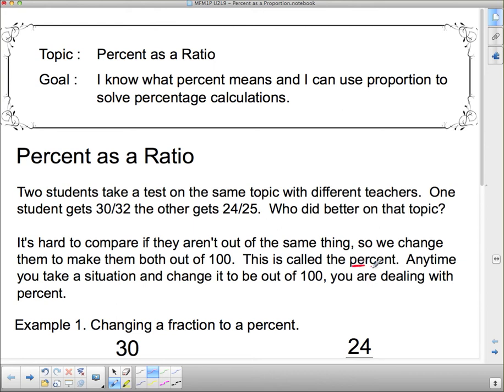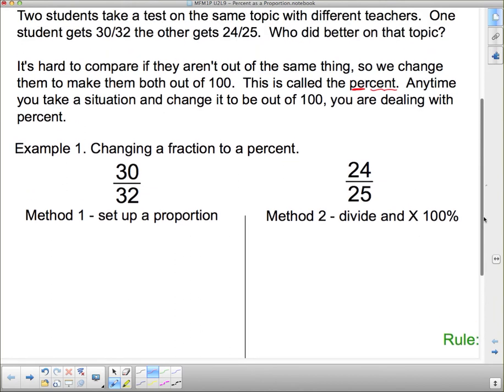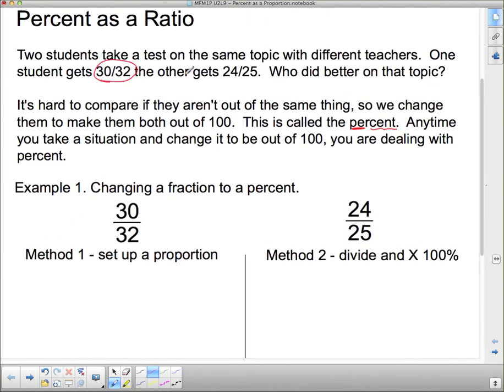Per means out of and cent means 100. There are 100 cents in a dollar. So percent means out of 100. Anytime you take a situation and change it to be out of 100, you're dealing with percent. We're going to change a fraction to a percent using these two fractions. This person got 30 questions right out of 32, their fraction is 30 out of 32. This person got 24 correct out of 25, their fraction is 24 out of 25.